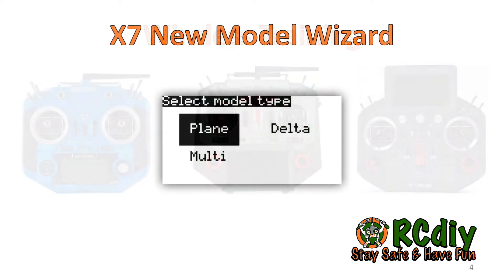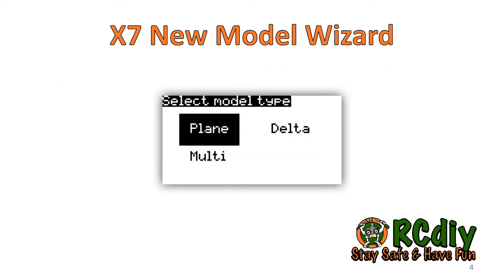The X7 transmitters now have a new model wizard. This creates standard V-tail and flying wing models, and there is also an option for multi-rotors. Download the SD card contents using Companion to be able to use the wizard.